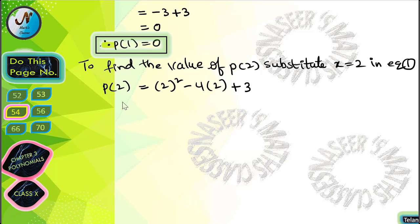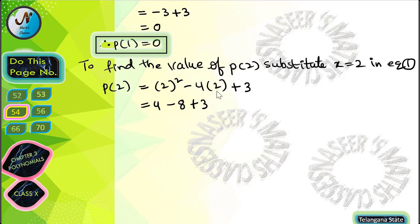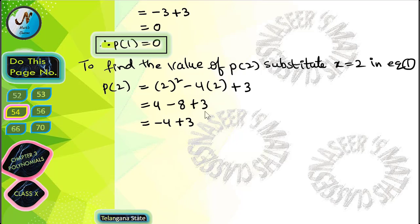After substituting x = 2 in equation 1, we get p(2) = 2² - 4(2) + 3. After simplification, 2² = 4 and 4 × 2 = 8, so we can write 4 - 8 + 3.